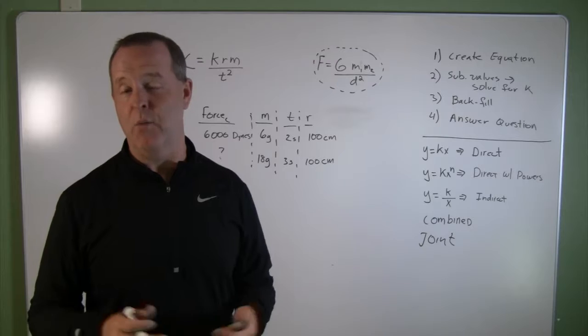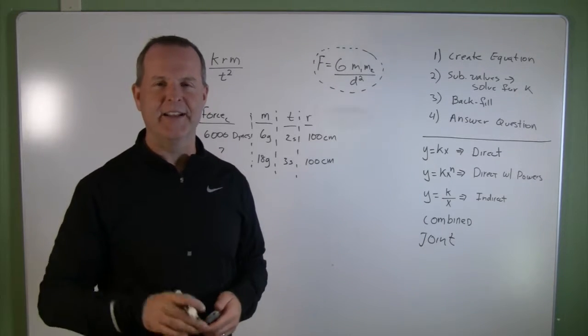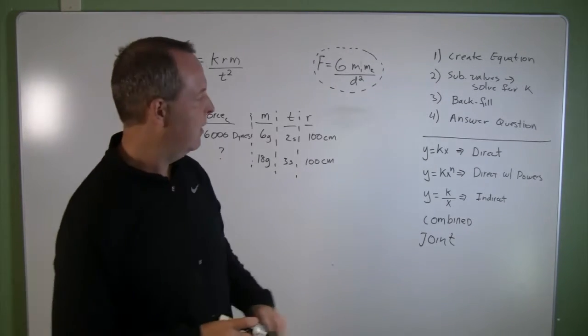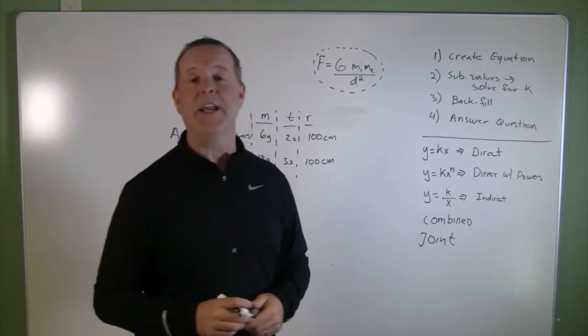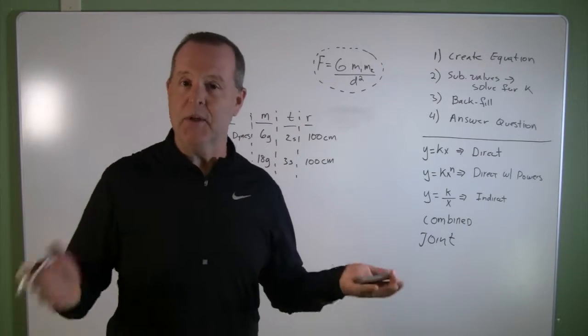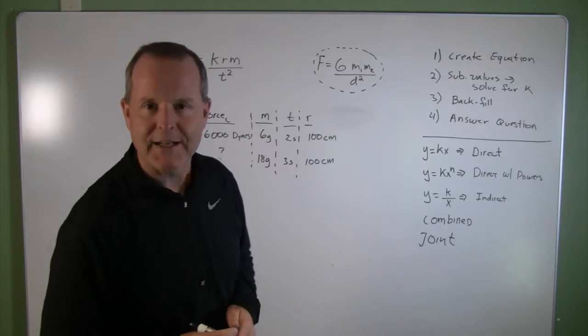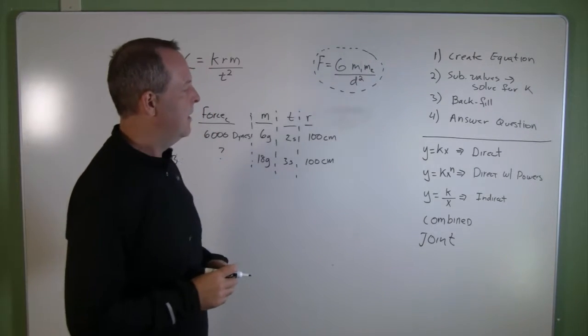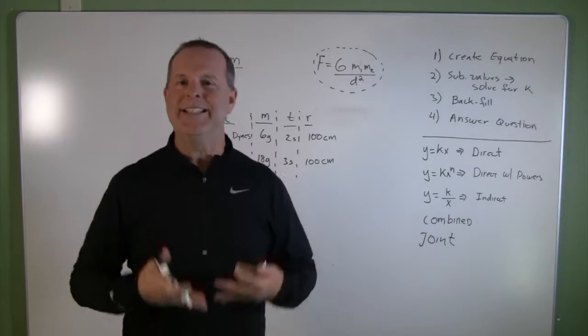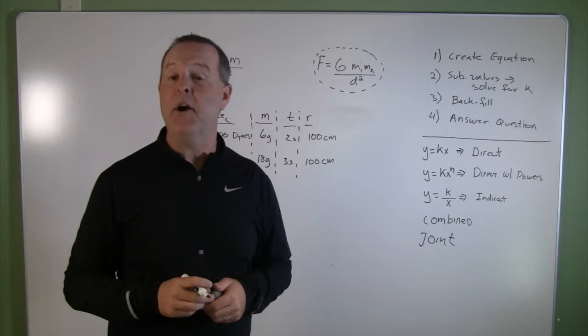We have another type of variation that I want to share with you, and I forgot to list it earlier, but it's called a joint variation, which is very similar to combined, which is maybe one of the reasons why I forgot to list it to begin with. But a joint variation adds some additional variables involved.